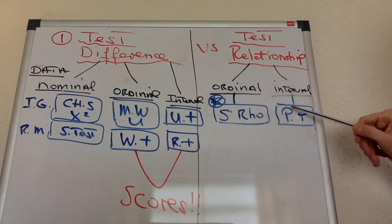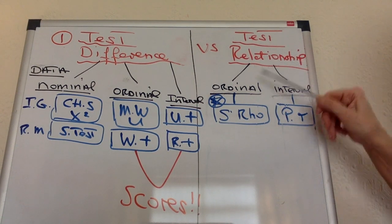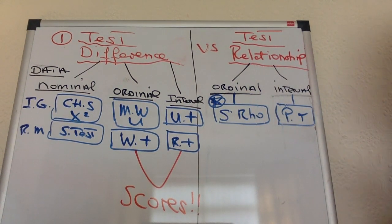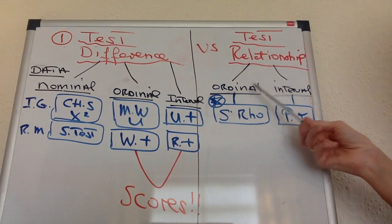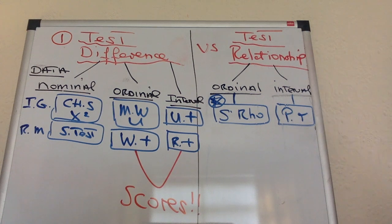Even if there is interval data, Spearman's Rho cannot lose you marks. Be very clear on this: all correlational data is ordinal. Therefore, Spearman's Rho is good for all tests of relationship and you can't lose marks. So if you're not sure whether you've got ordinal or interval data here, just go for Spearman's Rho if you've got a relationship test. You can't go wrong. You can't lose marks. Trust me.